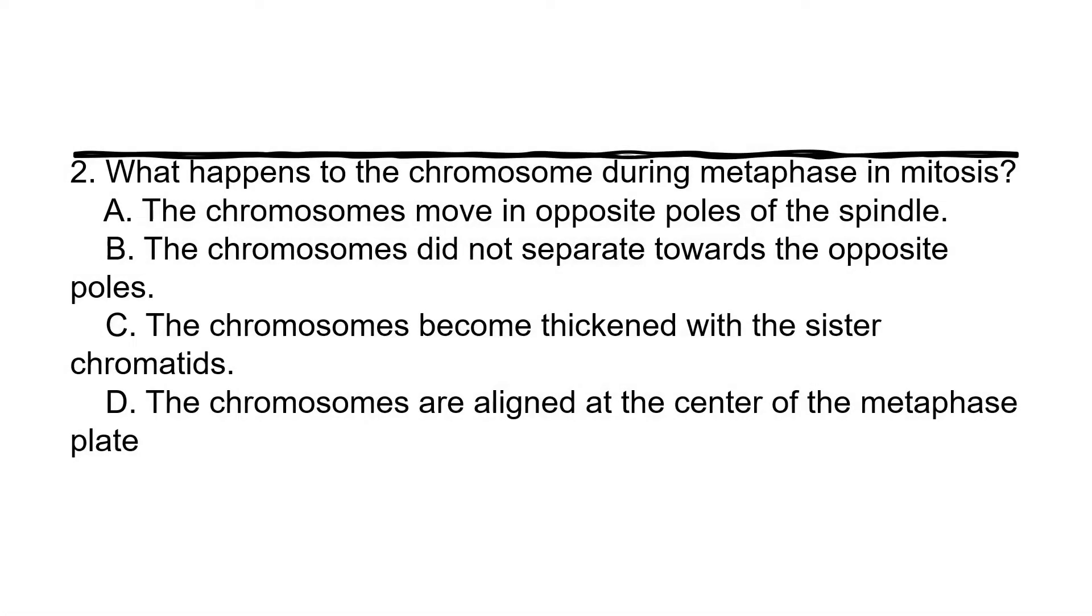Number two: what happens to the chromosome during metaphase in mitosis? A. the chromosomes move in opposite poles of the spindle. B. the chromosomes did not separate towards the opposite poles. C. the chromosomes become thickened with the sister chromatids. D. the chromosomes are aligned at the center of the metaphase plate.